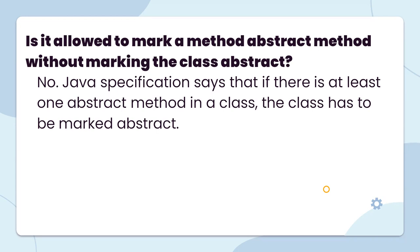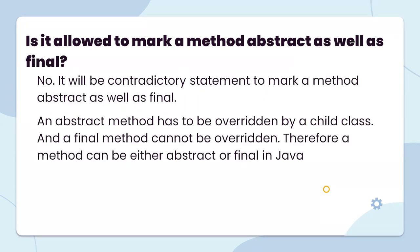Is it allowed to mark a method as abstract without marking the class abstract? No. Java specification says that if there is at least one abstract method in a class, the class must be marked abstract. Is it allowed to mark a method as both abstract and final? No. It would be a contradictory statement — an abstract method has to be overridden by a child class, but a final method cannot be overridden. Therefore, a method can be either abstract or final in Java, not both.